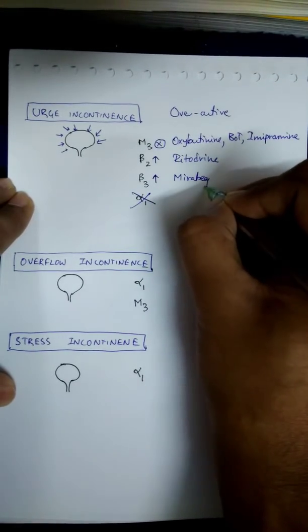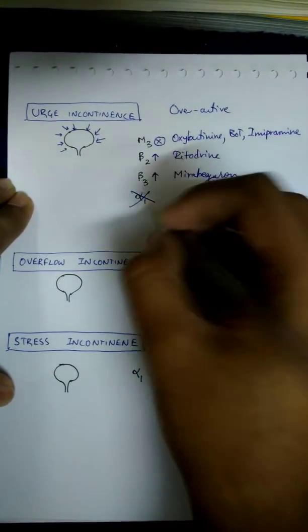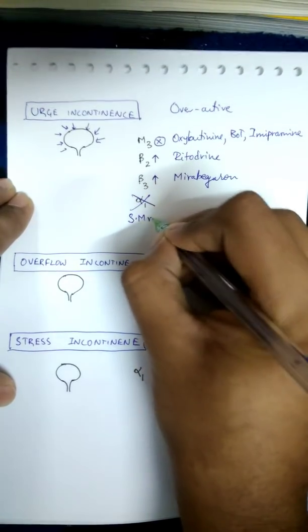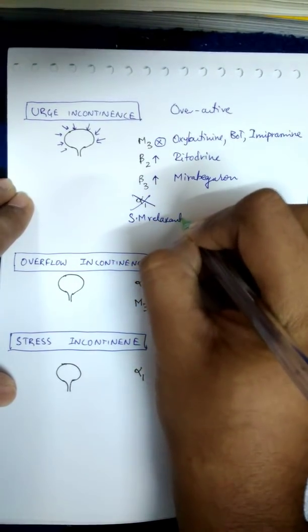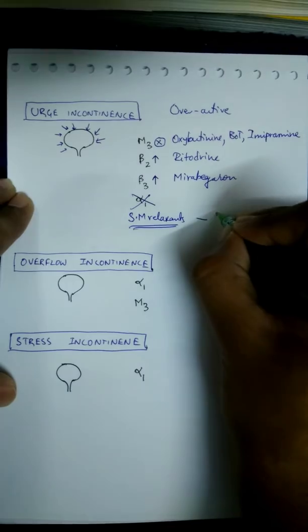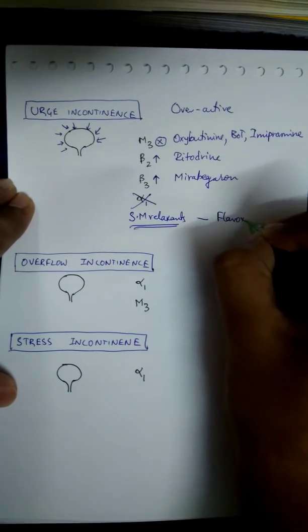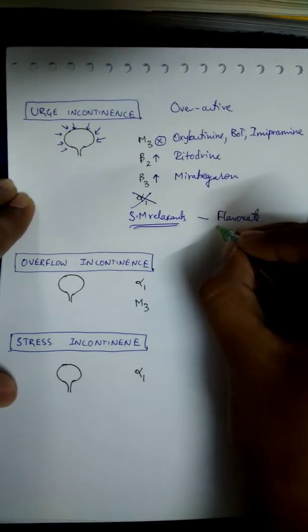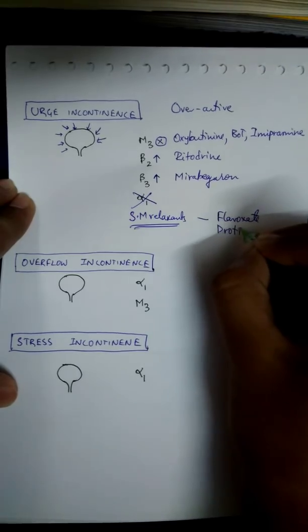Apart from this, direct smooth muscle relaxants can be given like flavoxate and drotaverine.